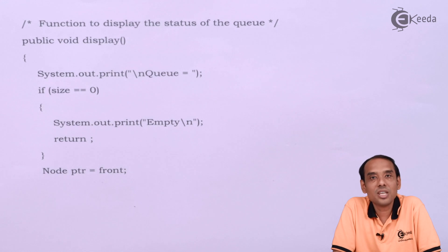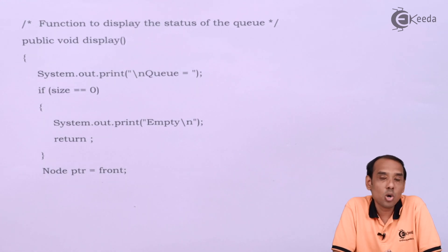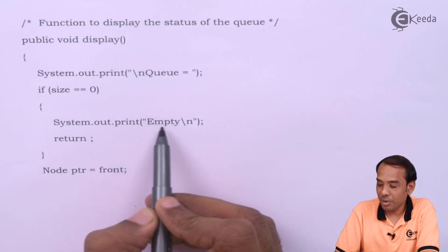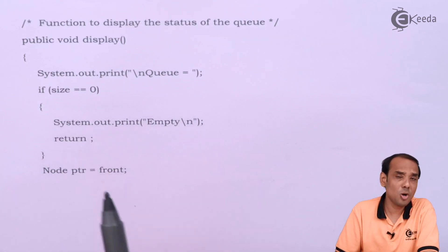In case it is 0, it means there are no elements to display, or in other words I can say there are no elements to delete in the given queue. So if size equal to 0, it means we have an empty queue.